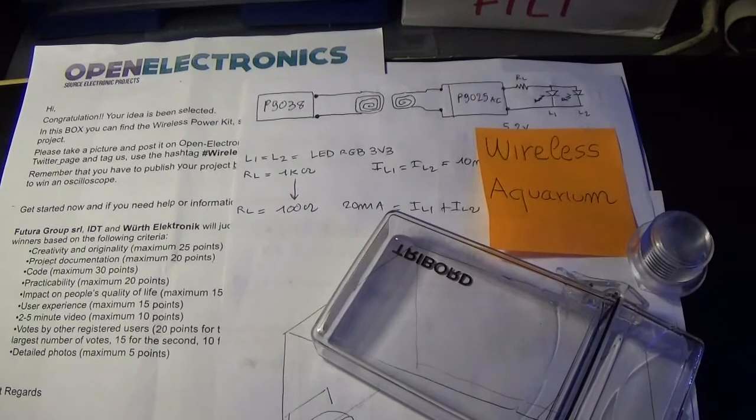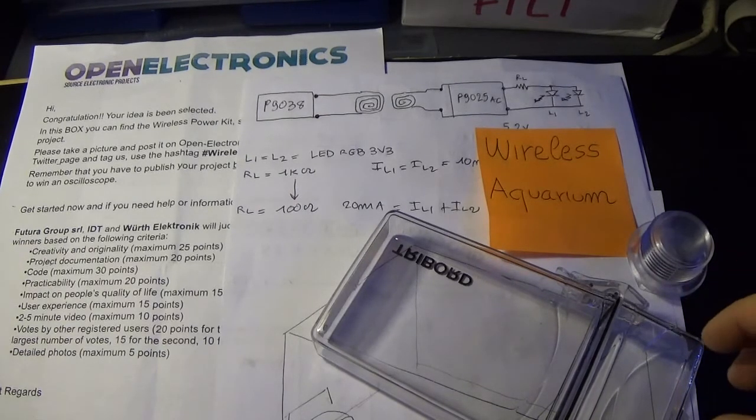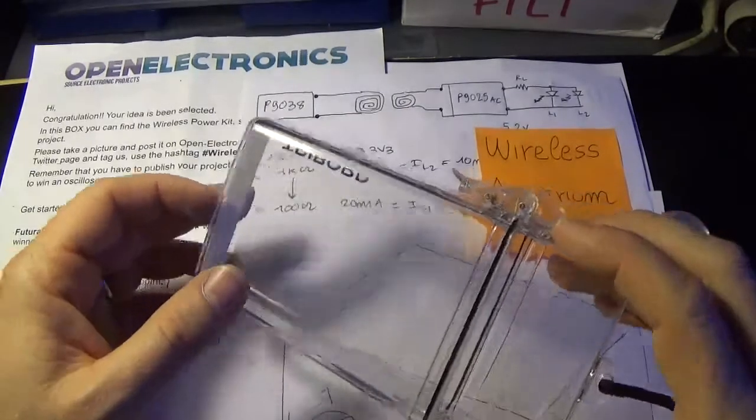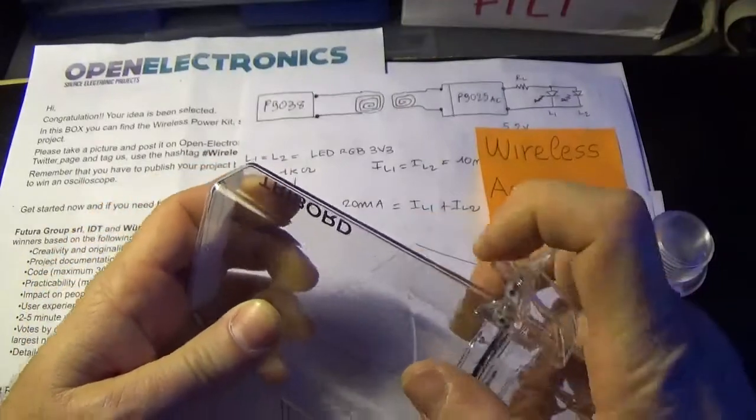So with reference to the list, about creativity, I think that this is very original as an idea because I take one box that is a transparent IP7 box.